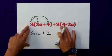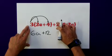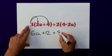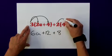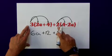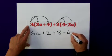I then apply the same principle to this set of brackets. 2 multiplied with the 4 is a positive 8, and then the 2 multiplied by the minus 2a will give me minus 4a.